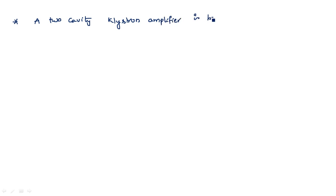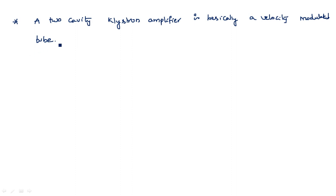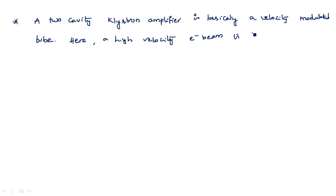The two-cavity klystron amplifier is basically a velocity modulated tube. You need to remember that the two-cavity klystron amplifier works with the principle called velocity modulation. I will explain what velocity modulation means and how the velocity of the electron changes with respect to time depending upon the applied voltage potential. A high velocity electron beam is formed and sent down.